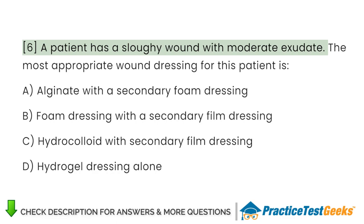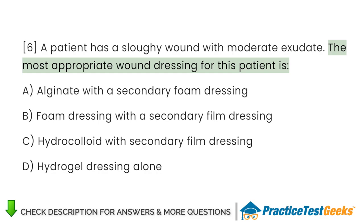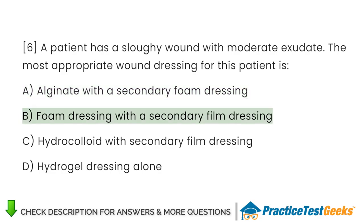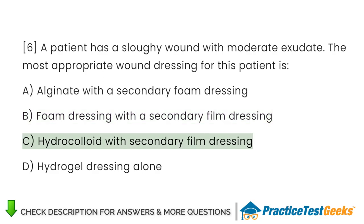A patient has a sloughy wound with moderate exudate. The most appropriate wound dressing for this patient is: A. Alginate with a secondary foam dressing. B. Foam dressing with a secondary film dressing. C. Hydrocolloid with secondary film dressing. D. Hydrogel dressing alone.